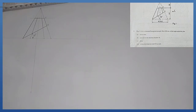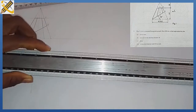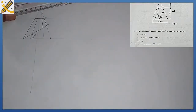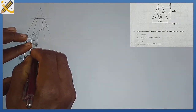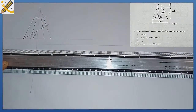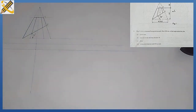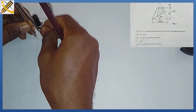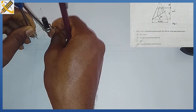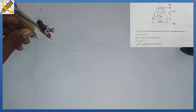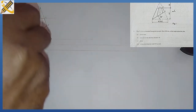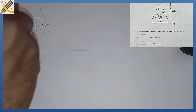Pattern development for this truncated hexagonal pyramid. The very first thing is to produce the plan. Measuring from this area: 10 mm, 10 mm. Having done that, the radius of our pyramid is 26 mm.